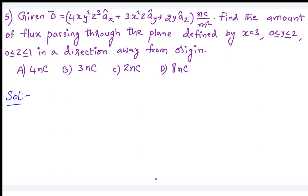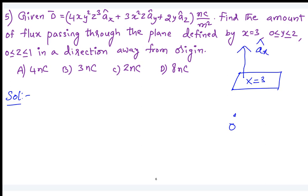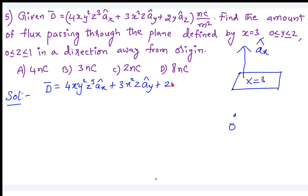Positive x or negative x here? First of all, you can see x equal to 3 is a surface parallel to the YZ plane, and this is your origin. So the direction of this surface is in the positive x direction — which is nothing but positive ax only. So you know the vector D and the value of dS. So dS is dy dz into ax cap.